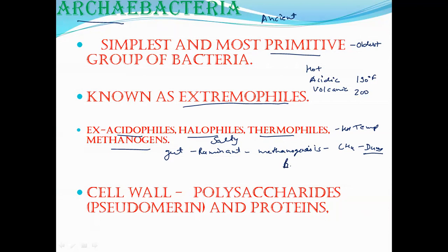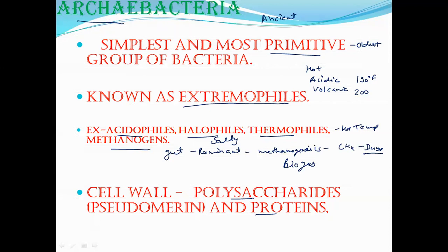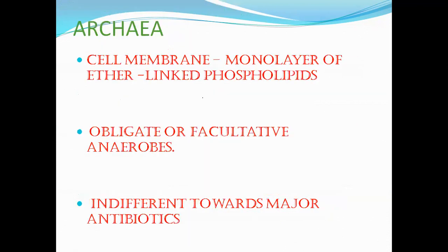Methanogens are very important for the production of biogas. Archaea cell wall is made up of polysaccharide and proteins. Usually bacteria cell wall is made up of peptidoglycan, but archaea cell wall is made up of polysaccharide. This cell wall provides protection from bursting in hypotonic conditions and also maintains shape and size, helping them survive in extreme conditions.